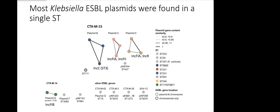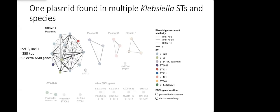However, we did find one plasmid that was found in multiple Klebsiella sequence types and even multiple Klebsiella species. This plasmid we called plasmid A. It carried a CTX-M-15 gene, it was pretty big at about 250 kilobase pairs, it had IncFIB and IncF2 replicons.